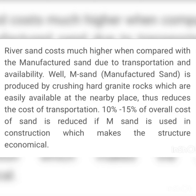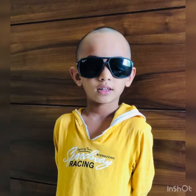Depending on availability and cost, you can choose either river sand or manufactured sand for construction purposes, as both provide good strength in concrete structures. After watching this video, you should be able to identify the type of sand used at a construction site by color, and you will also be aware of which type of sand to use for different construction purposes.